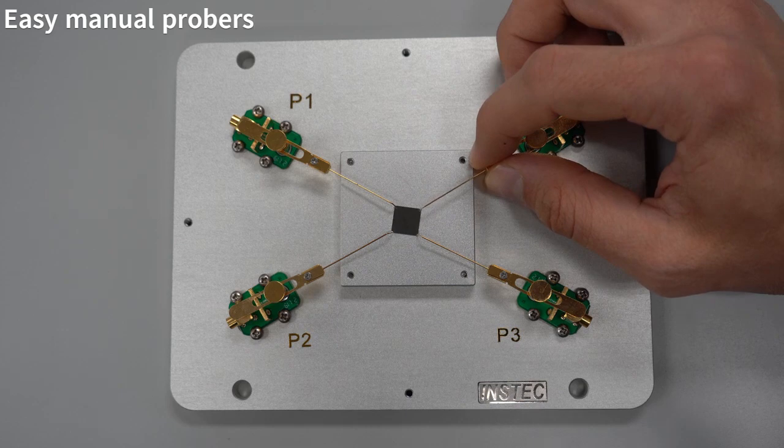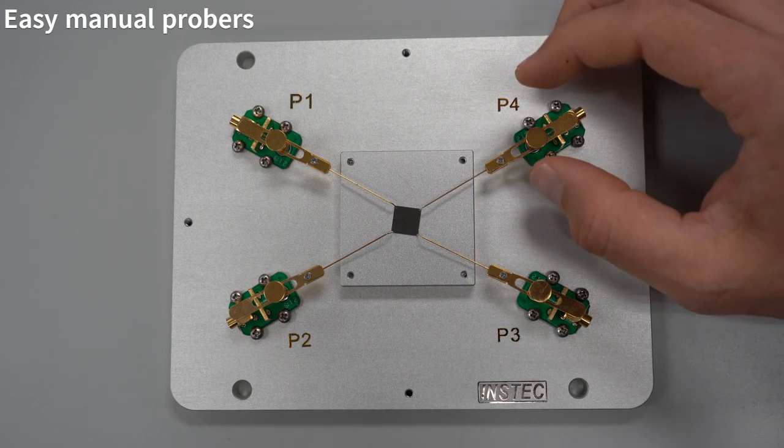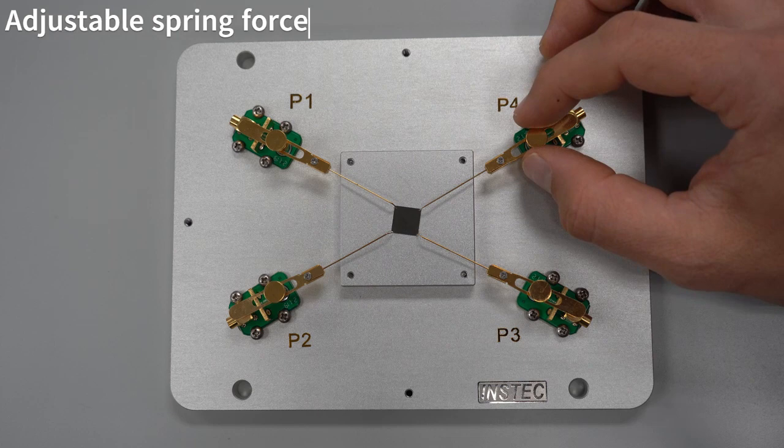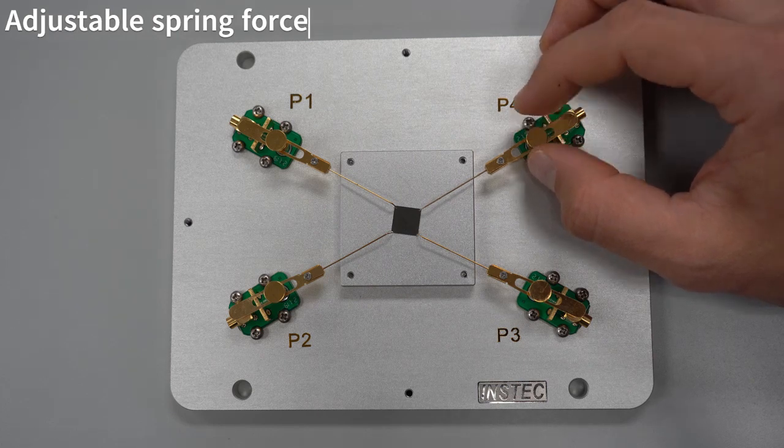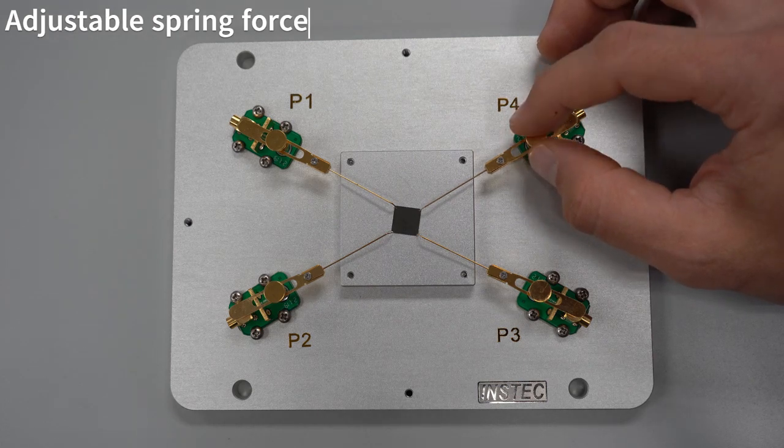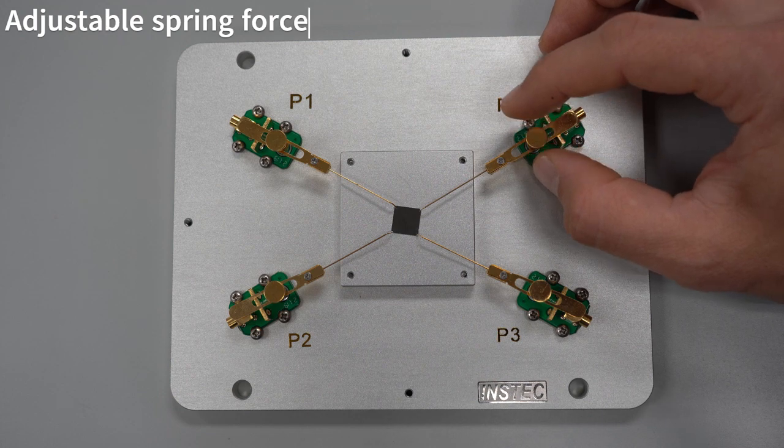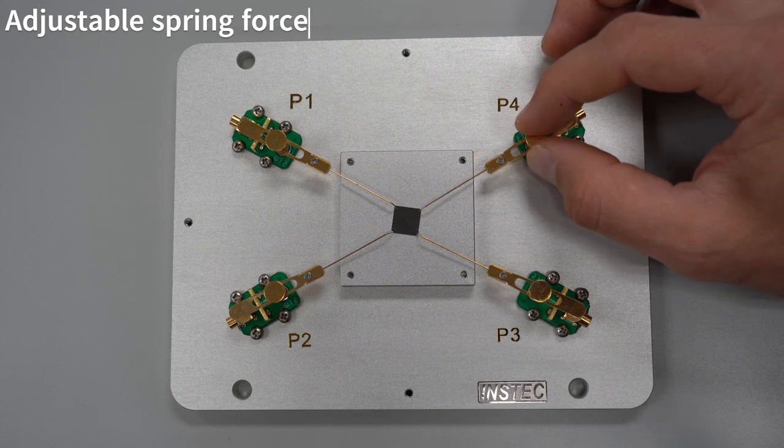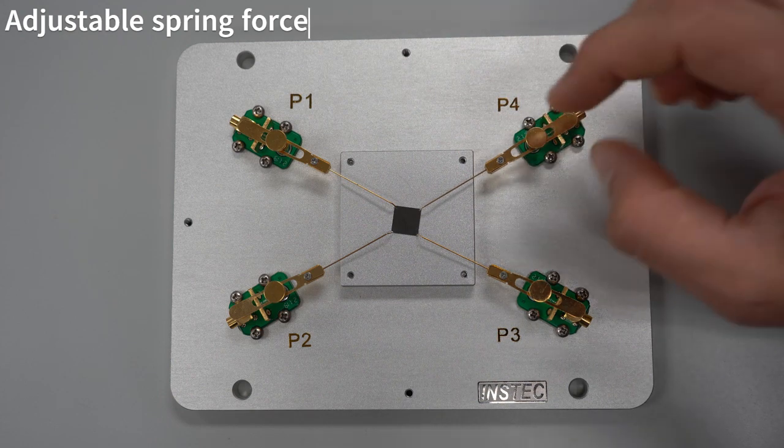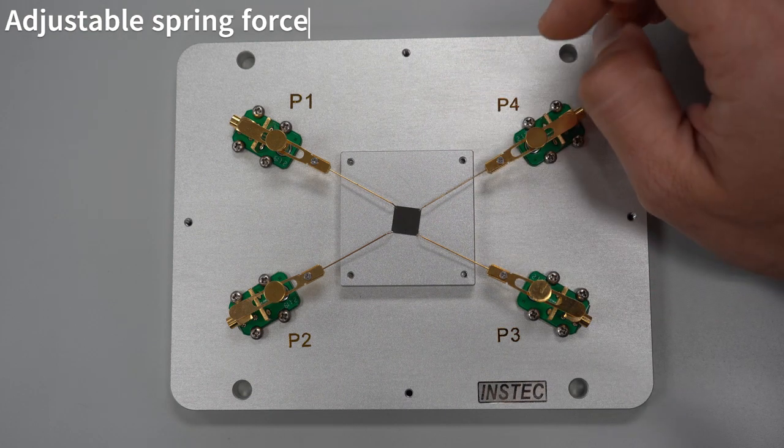When you find your electrical pad, simply drop it down. You can adjust the spring force of this system using this thumb screw here. Just loosen it up to relieve the force on it, or tighten it by twisting it the other direction to increase the pressure that this pushes down on the sample.